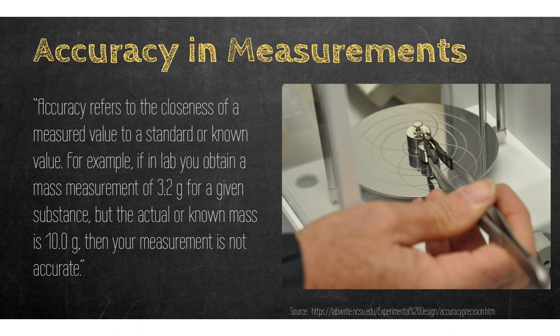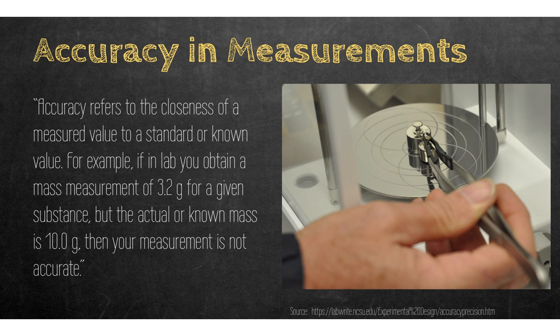In the laboratory, like what we'll be doing in chemistry class, accuracy refers to the closeness of a measured value to a standard or known value. Standards are used to calibrate a scale. If you mass a measurement at 3.2 grams but the actual mass was 10 grams, your measurement is not accurate. We use calibration weights to ensure our scale is functioning properly and is not a source of error.